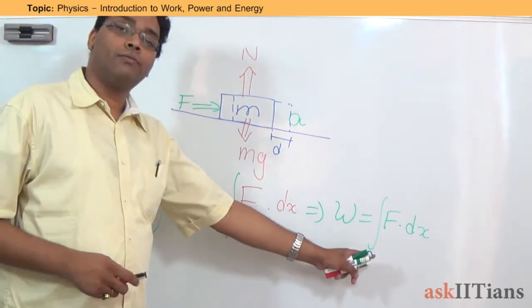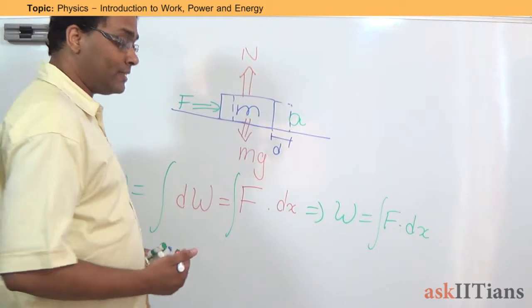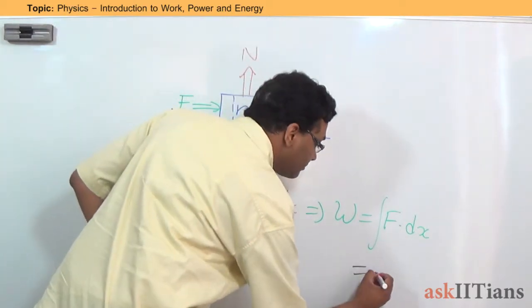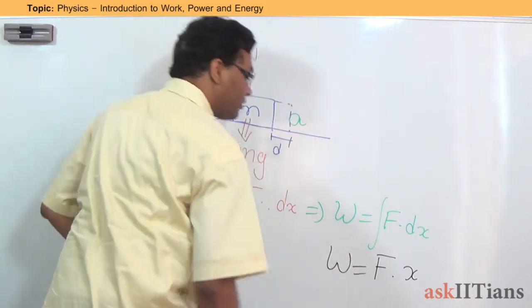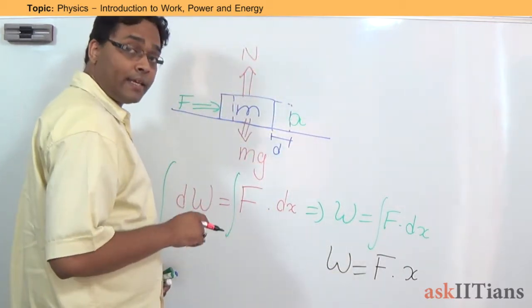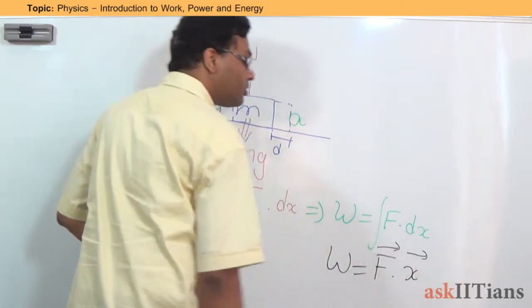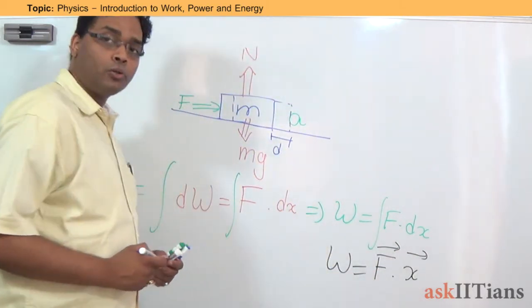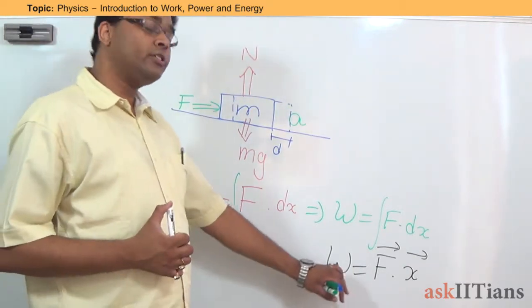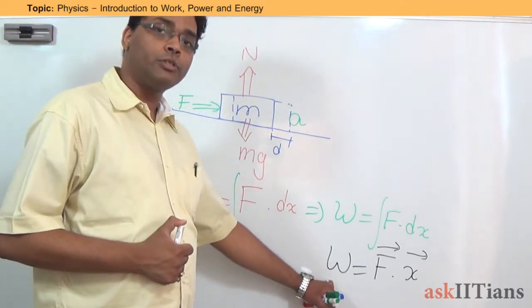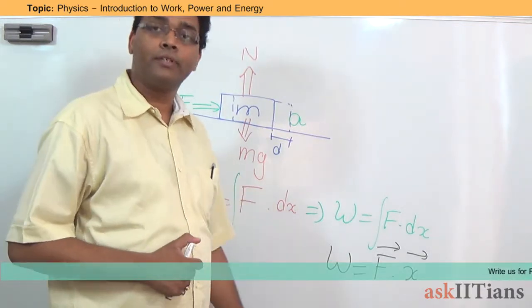One thing to note here is that if I assume the force is constant — force does not change with displacement — I can take it out of the integral. So this will simply be given by F into x. Now this is an application of the dot product which we have discussed before. F and x are both vector quantities, so this is the dot product. This value is going to be maximum when the force is applied along the same direction as the displacement produced.